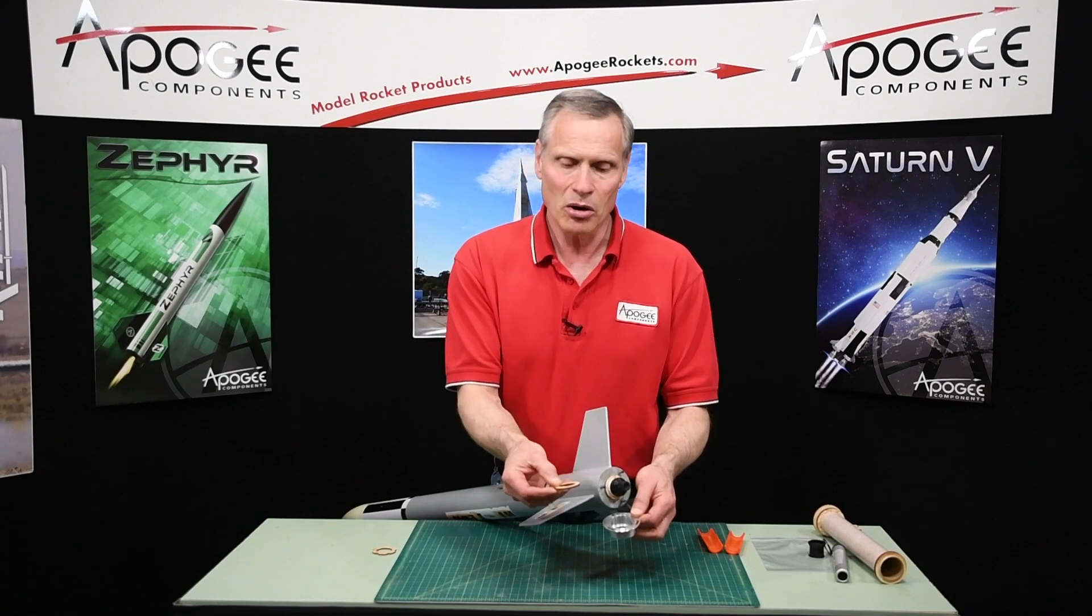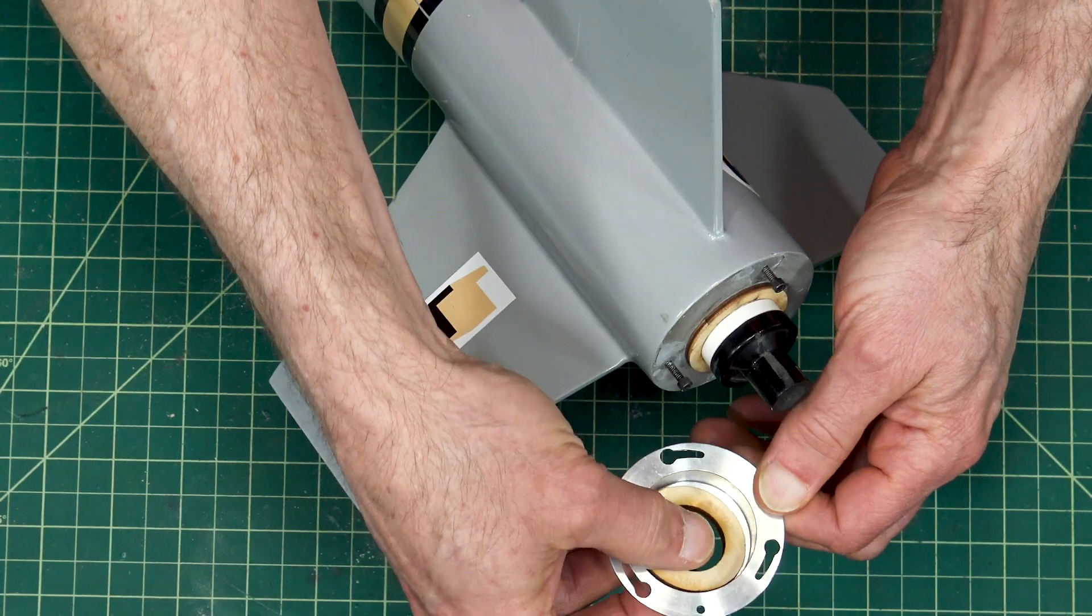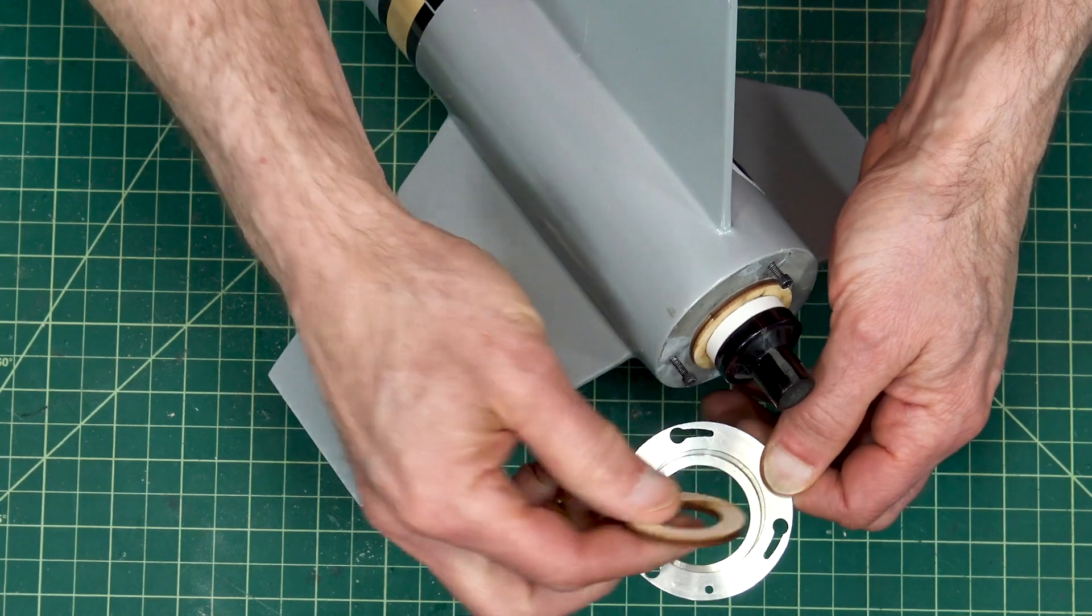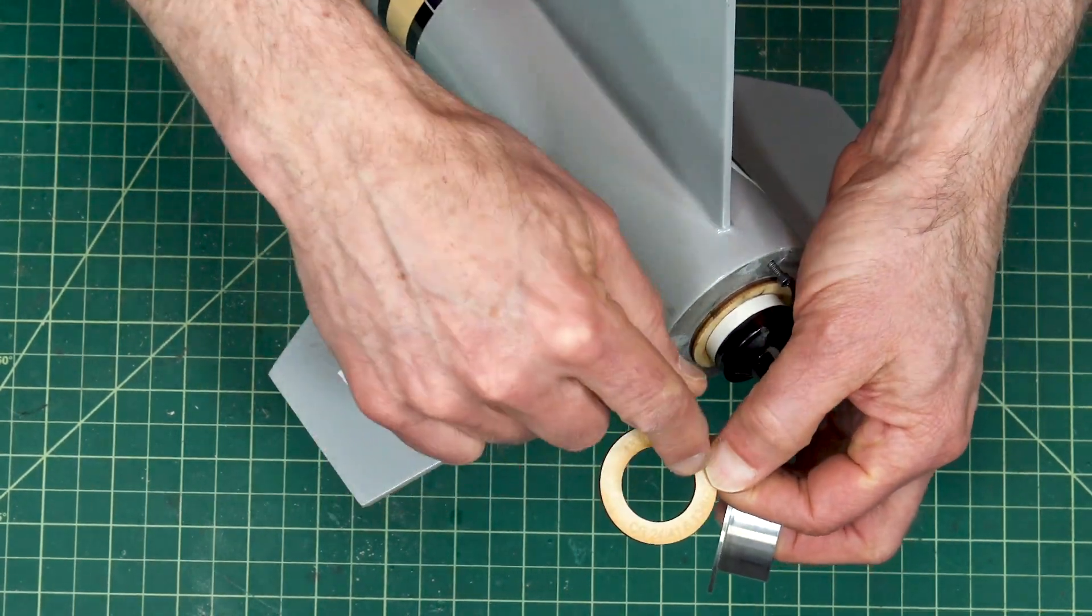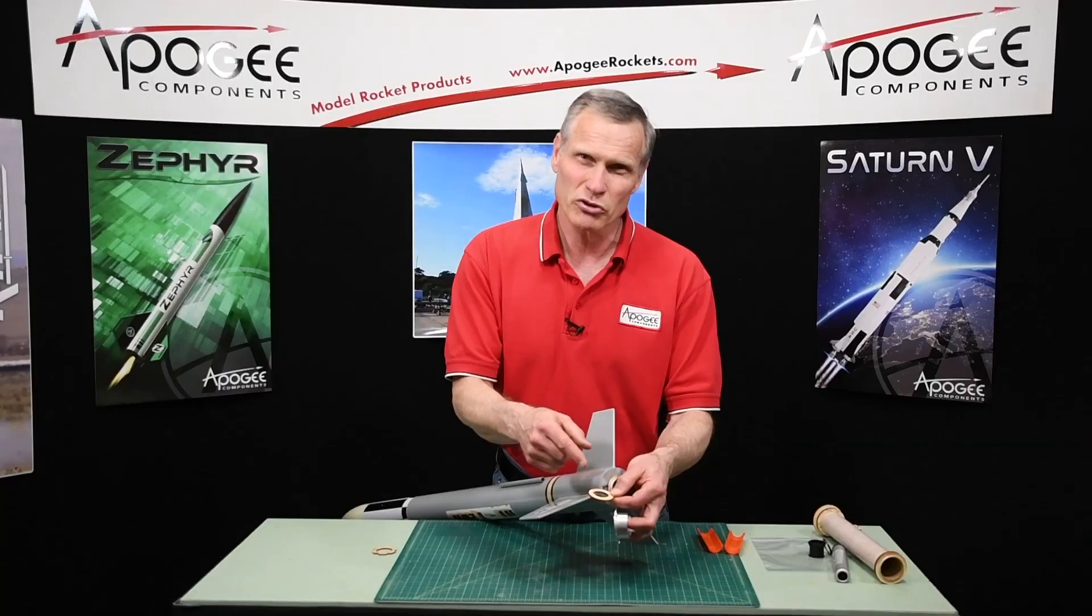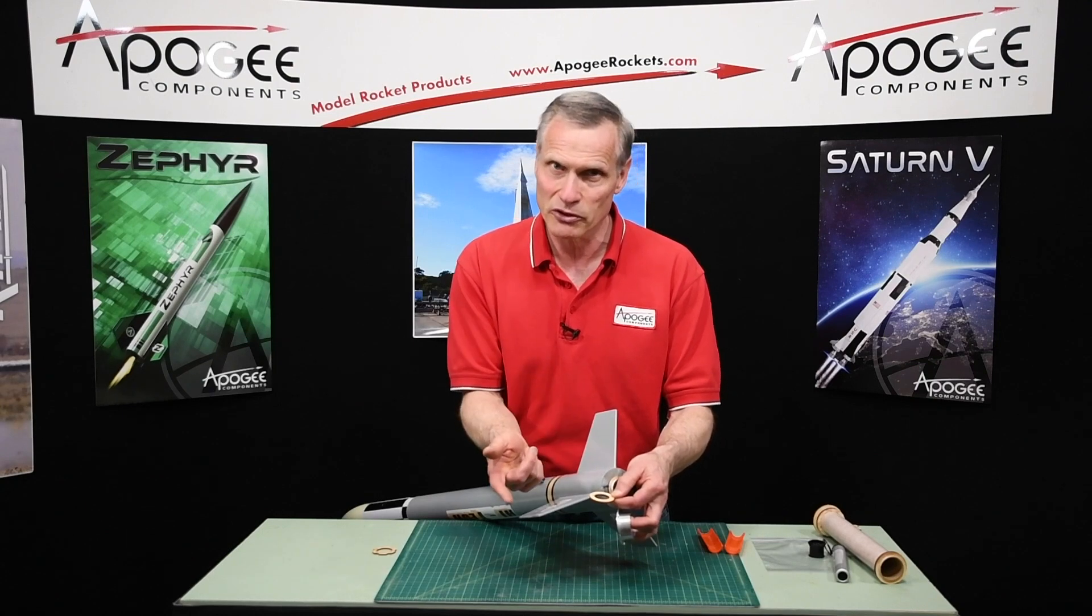You can take another ring that's a little bit smaller that will fit in. This happens to be a 24 millimeter to a 41 millimeter, so it's a 24 millimeter which is a BT-50 to a BT-60 centering ring, and that will drop in just fine.